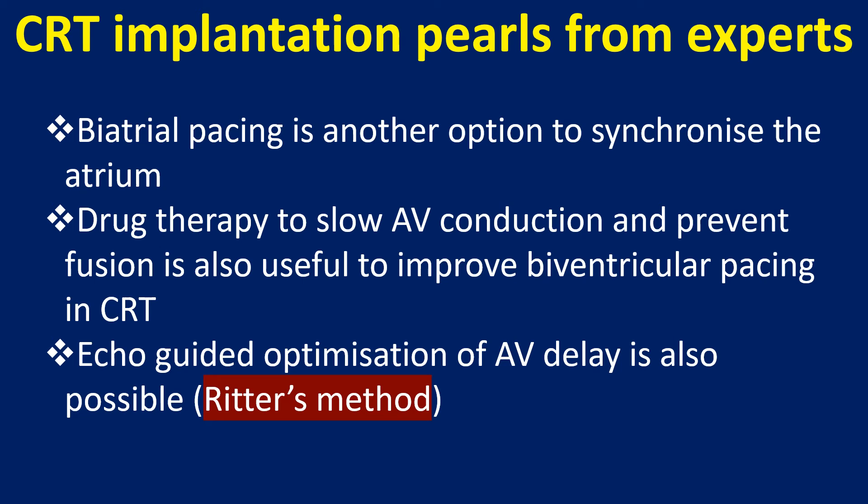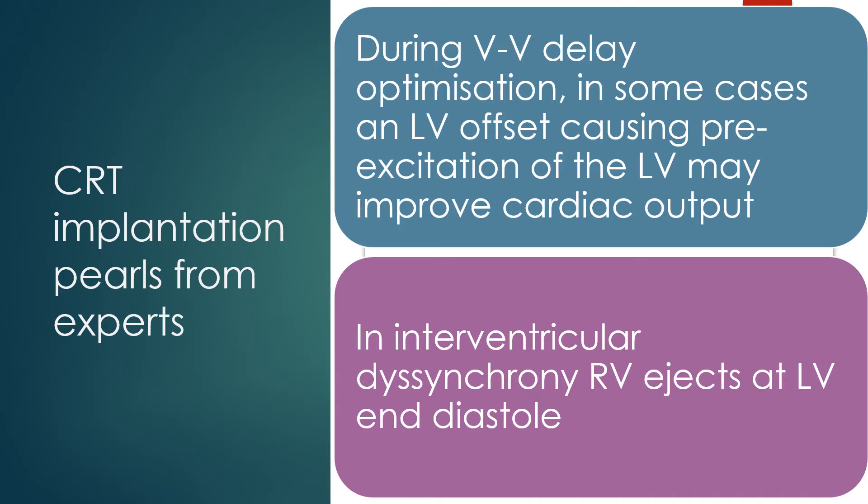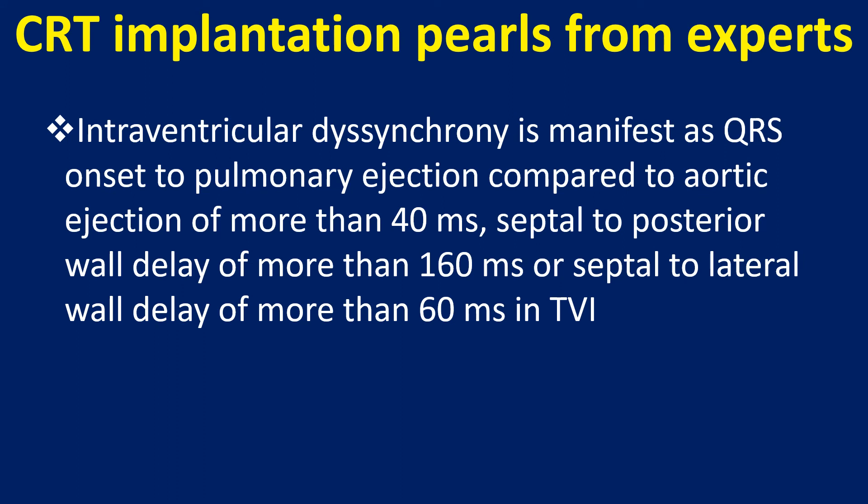Echo-guided optimization of AV delay is also possible using Ritter's method. During VV delay optimization, in some cases an LV offset causing pre-excitation of the LV may improve cardiac output. In intraventricular dyssynchrony, the RV ejects at LV end diastole. This is manifest as QRS onset to pulmonary ejection compared to aortic ejection of more than 40 ms, septal to posterior wall delay of more than 160 ms, or septal to lateral wall delay of more than 60 ms in TVI.